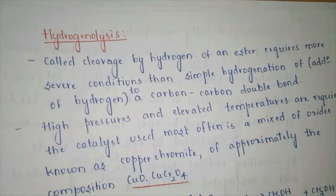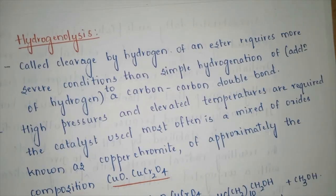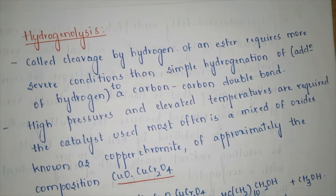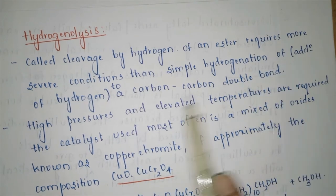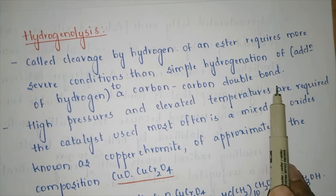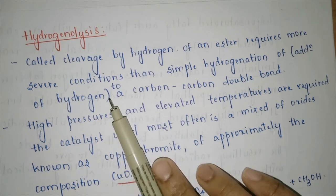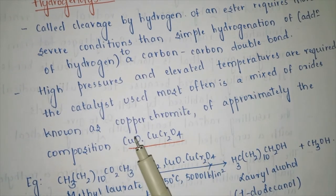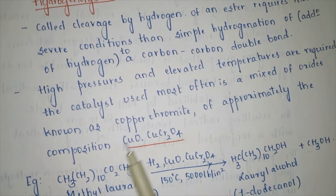The next concept from hydrogenation is hydrogenolysis. While hydrogenation converts double bonds to single bonds (liquid oil to solid), hydrogenolysis is the cleavage of an ester linkage by hydrogen. It requires more severe conditions than simple hydrogenation of a carbon–carbon double bond — requiring high pressures, elevated temperatures, and sometimes a catalyst.